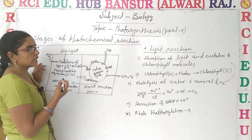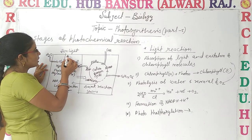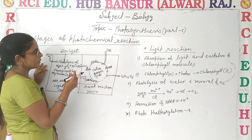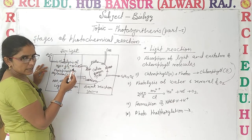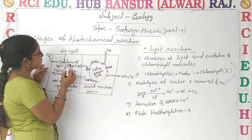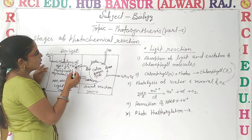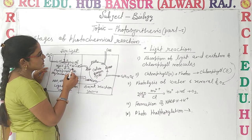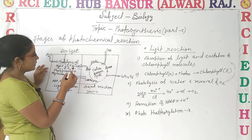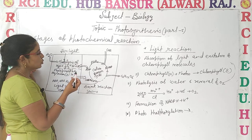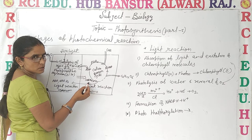Before that we also studied what happened: water is absorbed, and in the presence of sunlight, energy is absorbed from sunlight and that energy is utilized in the photolysis of water. So when water gets photolyzed, it releases oxygen, proton, and electron.